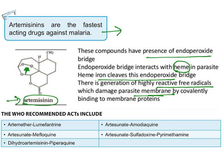The World Health Organization has recommended ACT — artemisinin combination therapy — where artemisinins are combined with other anti-malarials. WHO-approved combinations include artemisinin-lumefantrine, artesunate-mefloquine, dihydroartemisinin-piperaquine, and artesunate-sulfadoxine-pyrimethamine.